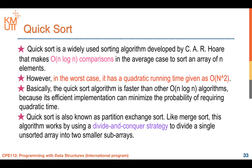QuickSort is a widely used sorting algorithm developed by Hoare — C.A.R. Hoare — that performs O(n log n) comparisons on average, similar to merge sort, to sort an array of n elements.